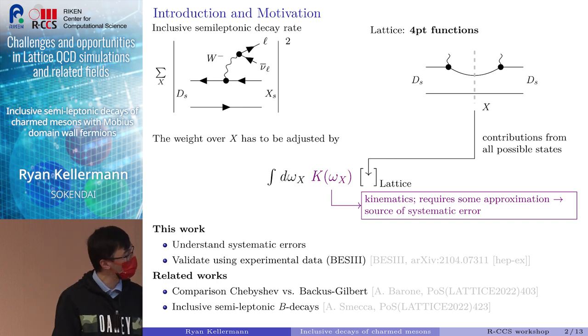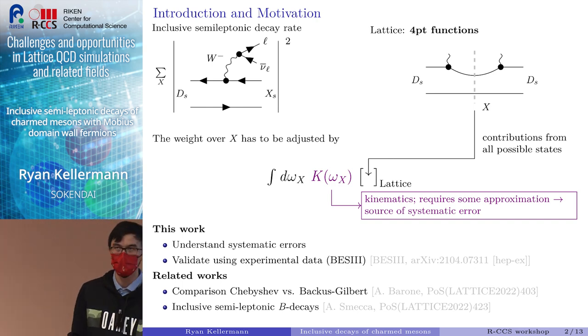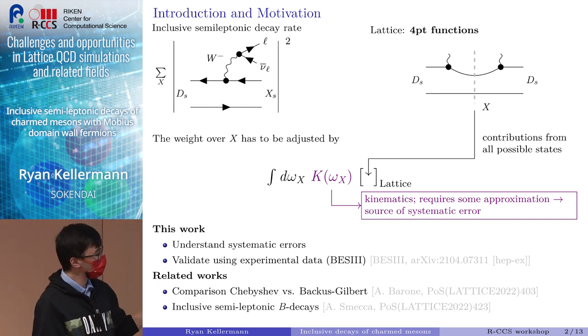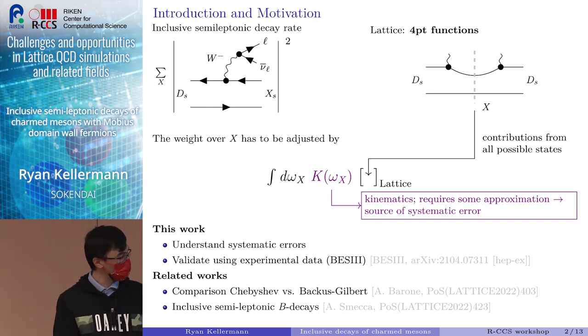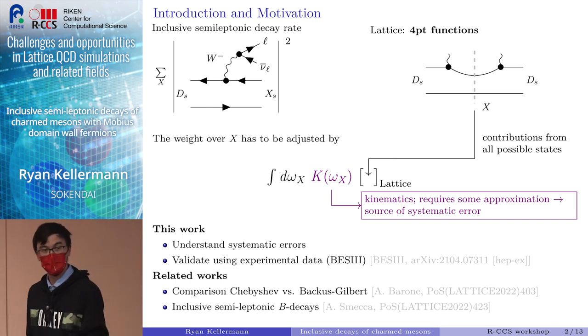I want to mention two different works going on in parallel to what I'm doing. One is the work from Alessandro Barone from the UKQCD group, who is comparing the Chebyshev and the Backus-Gilbert approach. There exist two different ideas proposed to treat inclusive decays on the lattice. One is the Chebyshev approach, which is the one I'm using. There's also the Backus-Gilbert approach proposed by Maxwell Hansen's group. Alessandro Barone's work is focusing on a comparison between these two methods.